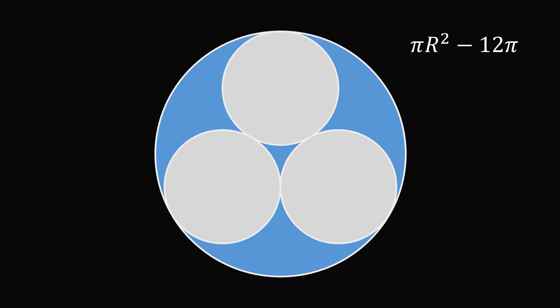Let's zoom in. Consider the centers of the circles and connect the centers of the small circles. Since the lower left circle is tangent to the large circle, we can construct a line between the centers of the circles and the tangent point. We can then drop a perpendicular from the center of the large circle to one of the sides of the equilateral triangle. This will be a right angle, and this will construct a 30-60-90 right triangle.